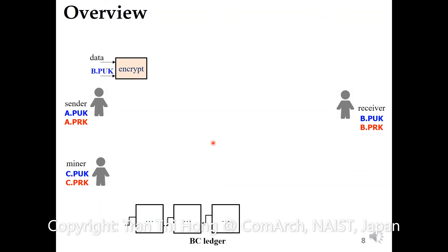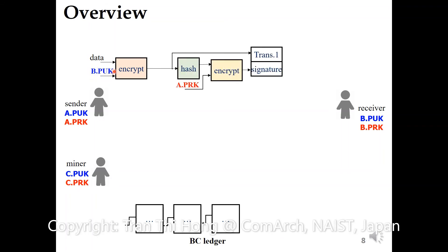Let's overview how asymmetric cryptography is used in a blockchain network. Let's say in the network we have sender A and receiver B, and there are some miners that take care of writing the data into the blockchain ledger. Here, A's public key is A.PUK and A's private key is A.PRK. Now A wants to send some data to B. So first, he or she will encrypt this data using the public key of B, to get a message, and then send the transaction data — the message and the signature together — to the mining pool.